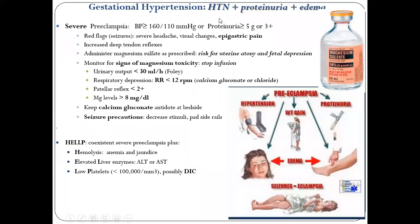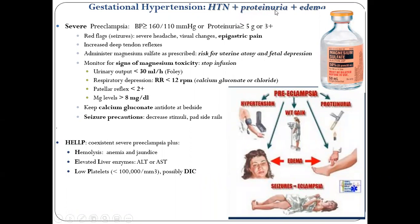Gestational hypertension: hypertension plus proteinuria plus edema — we call this pregnancy-induced hypertension because the mother developed hypertension due to pregnancy. It is very important to control it. If uncontrolled, pregnancy-induced hypertension causes weight gain, edema, and proteinuria. When these three features are together — high blood pressure, proteinuria, and weight gain or edema — we call it pregnancy-induced hypertension or pre-eclampsia. Pre-eclampsia: blood pressure more than 160/110 mmHg and proteinuria more than 1 gram or three plus.